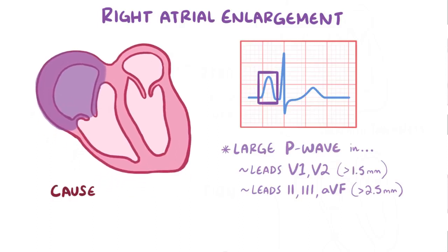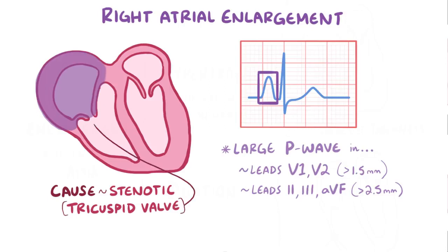One reason why right atrial enlargement develops is that there can be a stenotic or narrowed tricuspid valve, and that makes it difficult for the right atrium to eject blood into the right ventricle, and in response the right atrium enlarges.